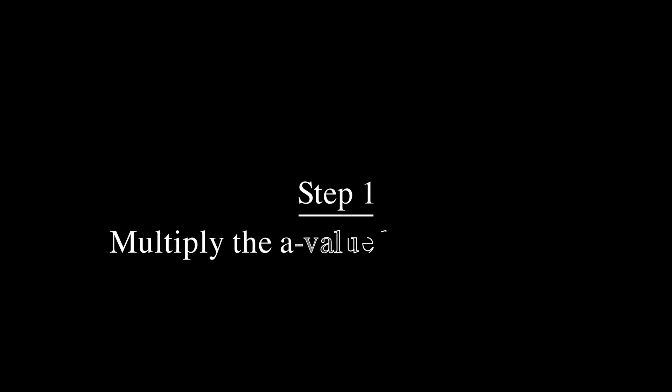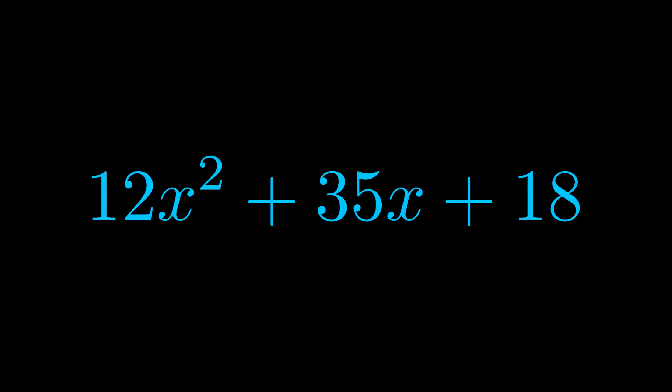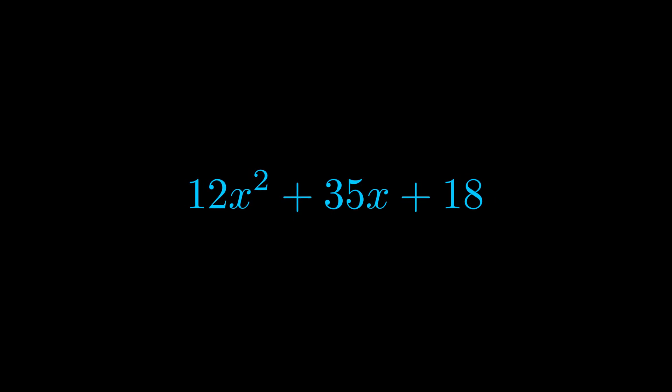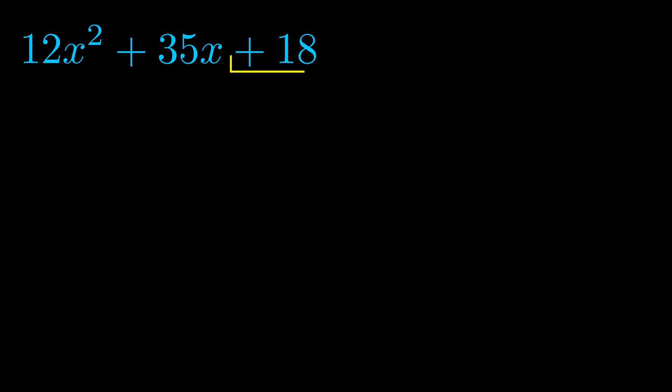Step one when factoring an equation of this form is to multiply the a value by the c value. Here we can see that our a value is the coefficient on the x squared term and our c value is the constant term.